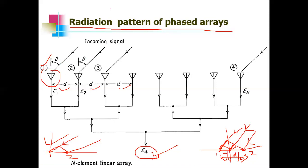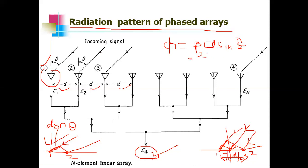The signals arrive at angle theta with respect to the normal, so the extra distance traveled to the adjacent element is d sin θ. This extra path length, written in terms of phase difference between adjacent elements, is φ = β d sin θ, where β = 2π/λ. Therefore φ = (2π/λ) d sin θ, where λ is the wavelength of the received signal.